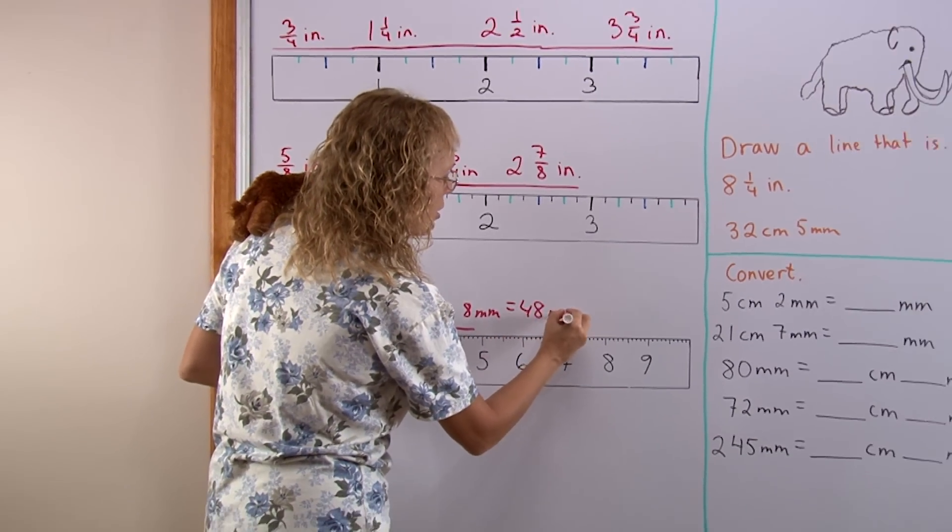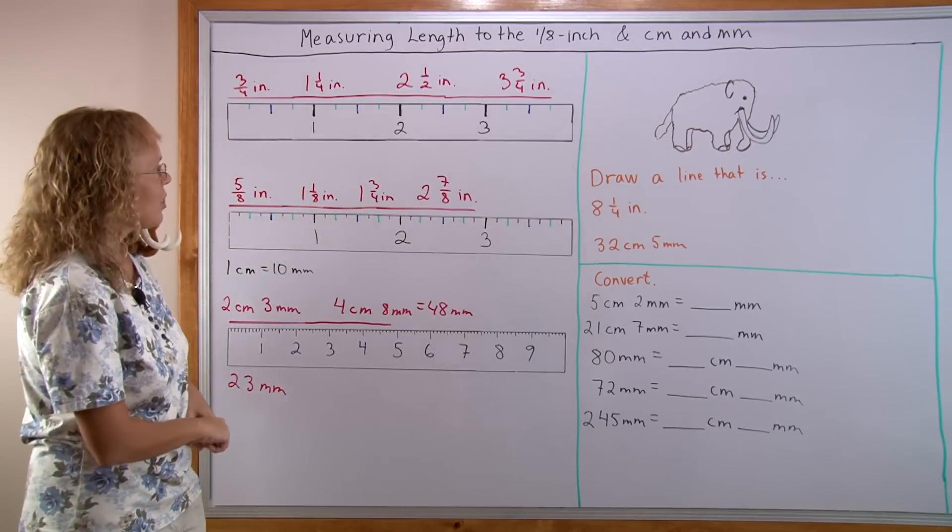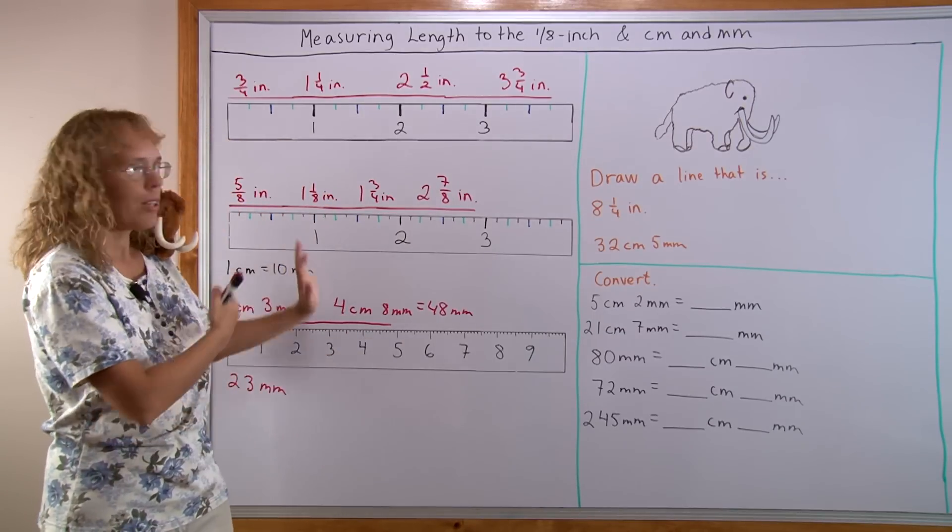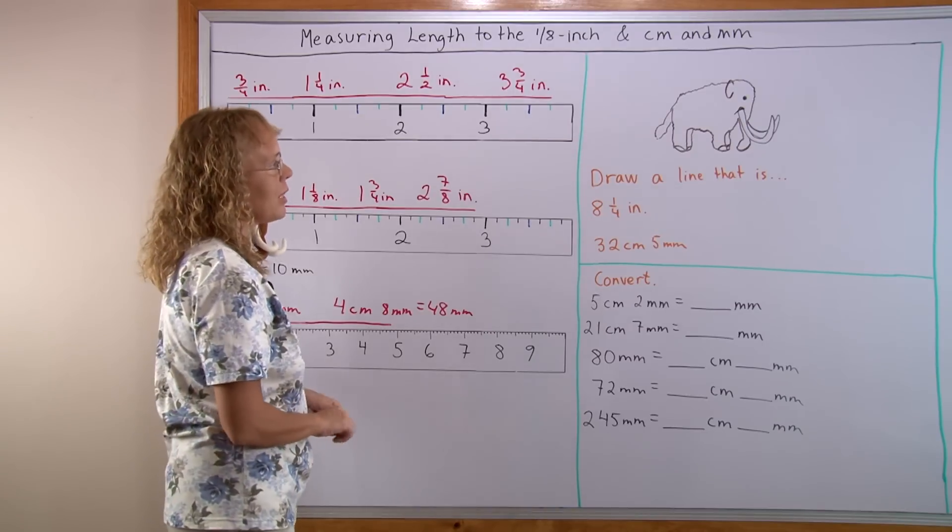And of course students need to practice this by measuring lines, measuring objects. So they become familiar with both kinds of measuring. Both kinds of rulers. But now let's go on.